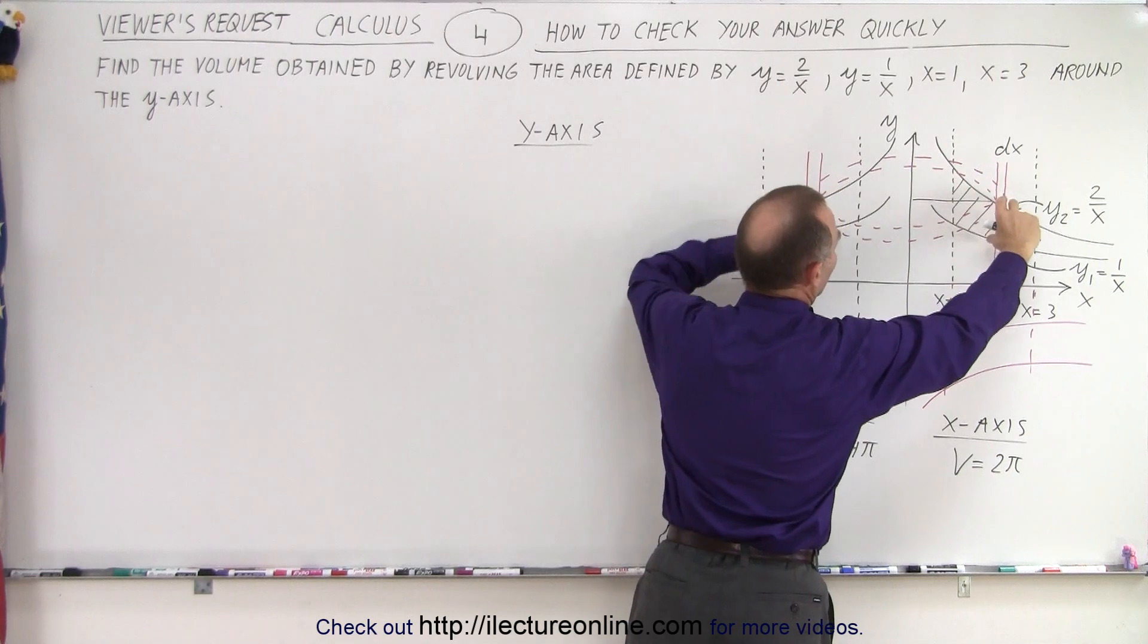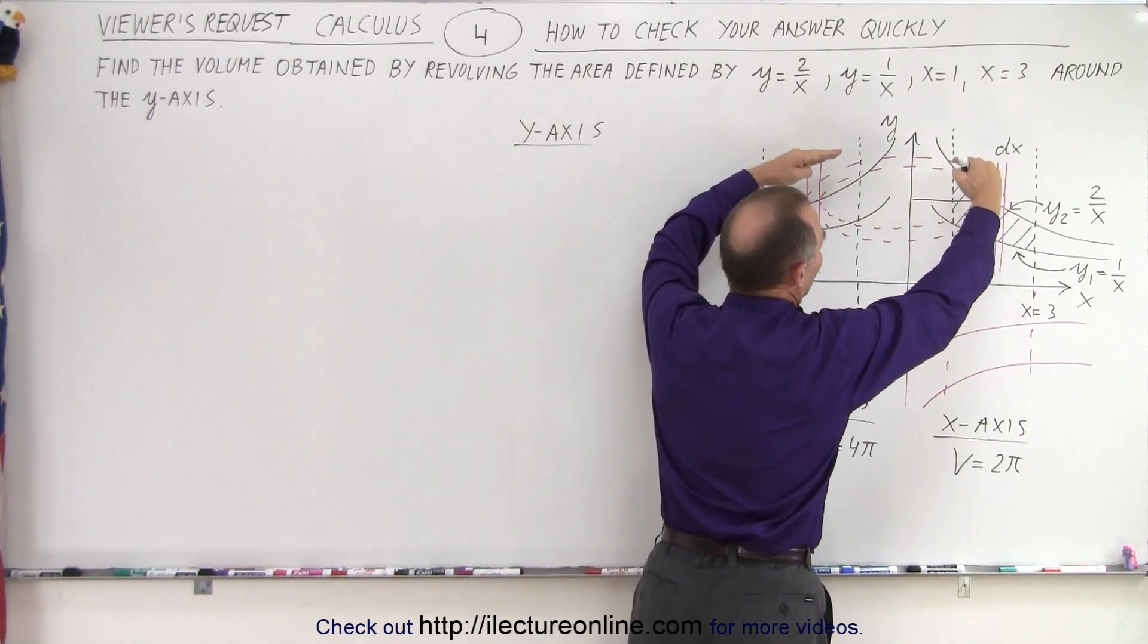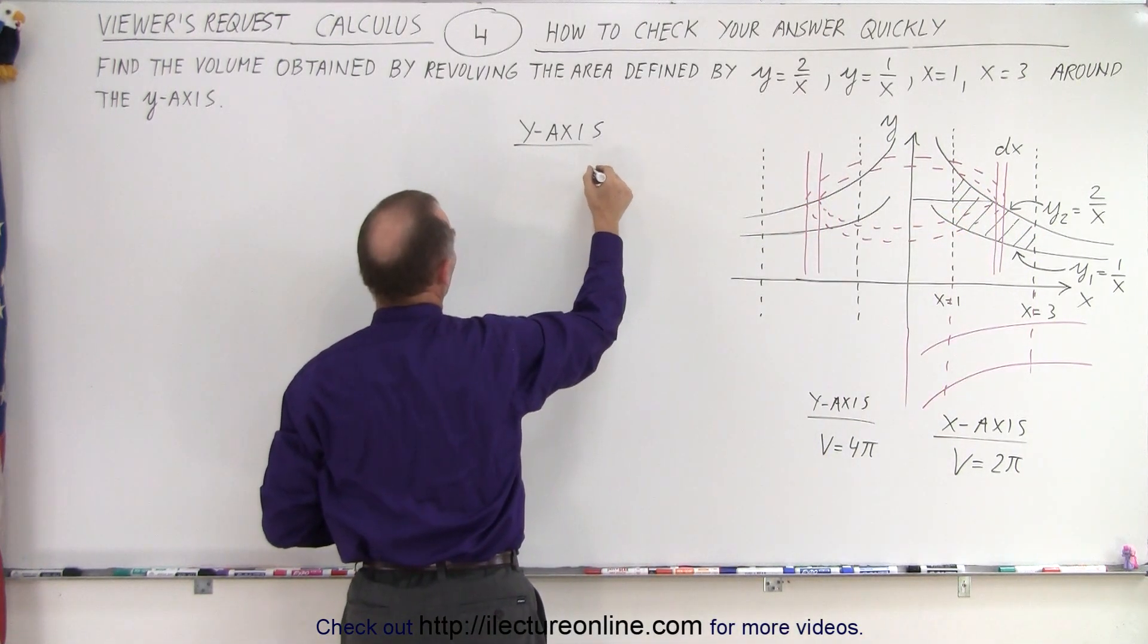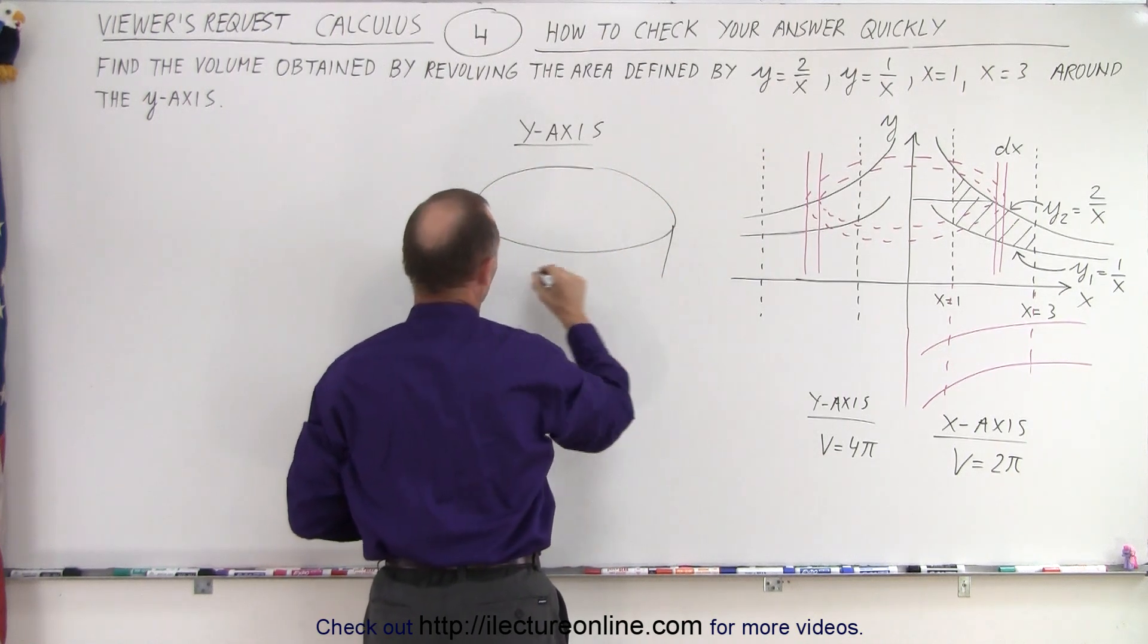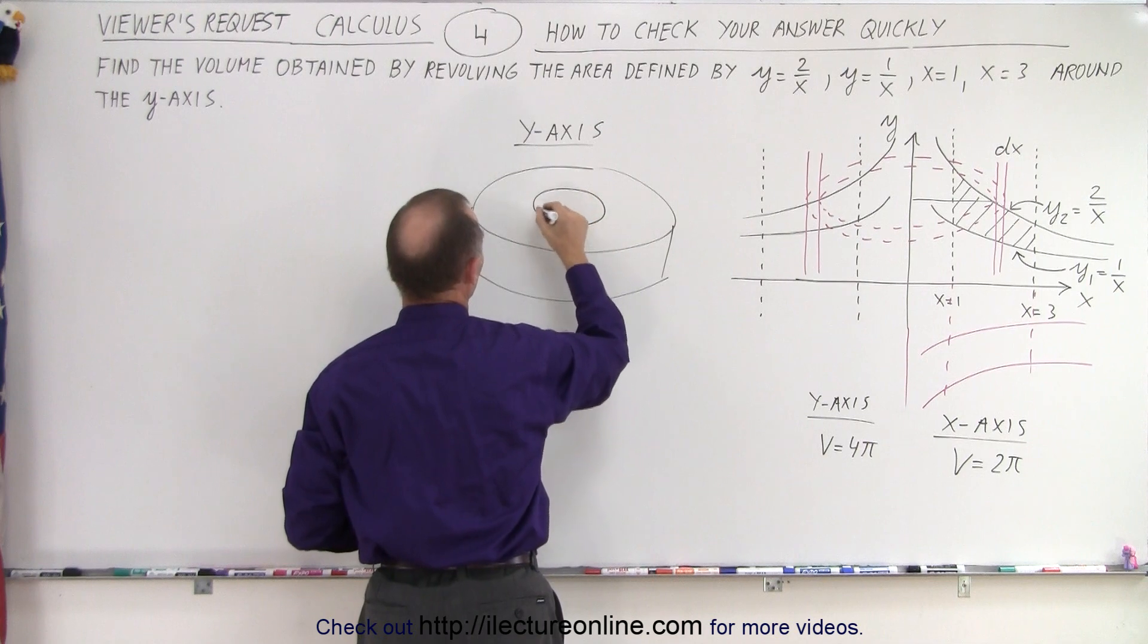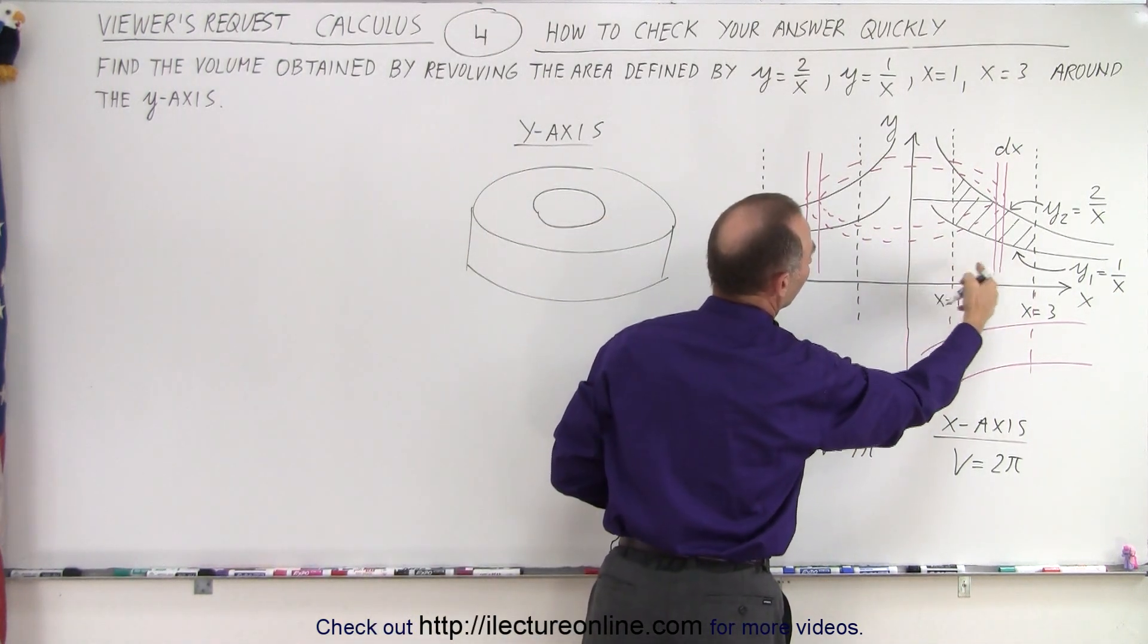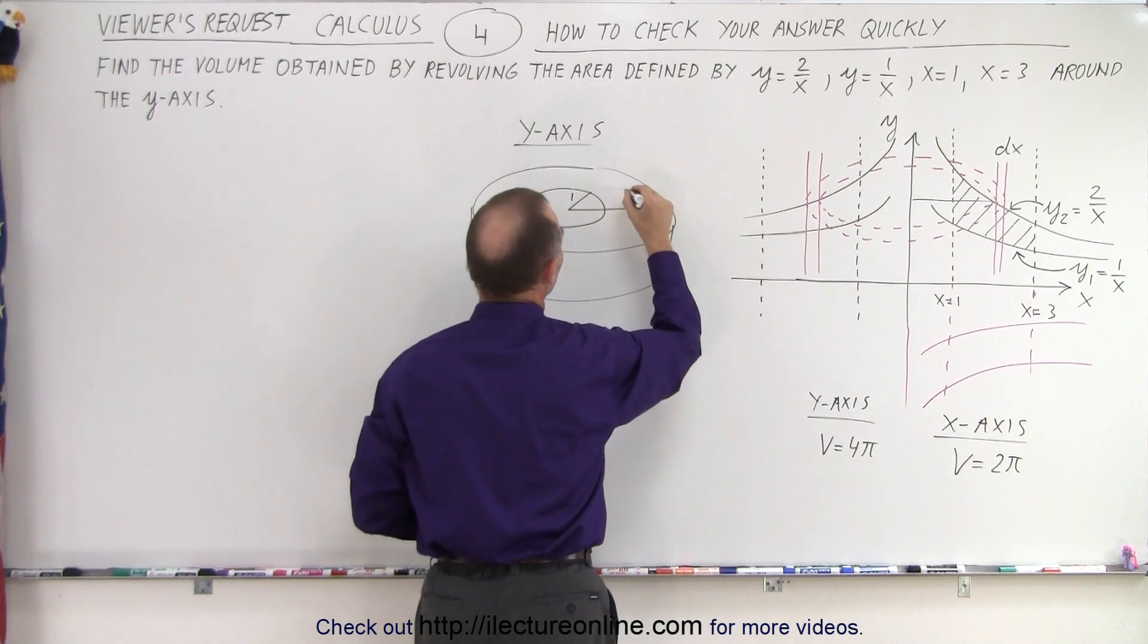If you take this structure right here, if you take this and you revolve it around, even though you get something that looks like this, you can kind of flatten it out and get the average height so that you end up with a structure that kind of looks like this. And it would be hollow on the inside like this. You can see that the radius of the inside would be 1 and the radius of the outside would be 3.